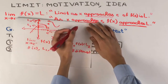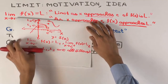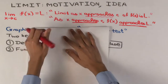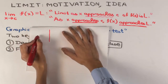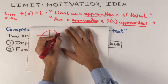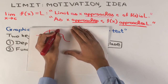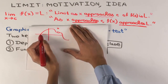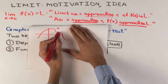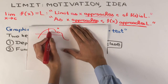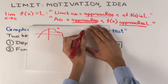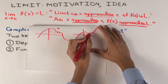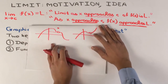Let me make an example where the limit does exist. Say you have a picture where the left-hand limit and right-hand limit are the same value, but the actual function value f(c) is something different. You could also have a situation where the function isn't defined at the point at all, but the limit still exists because the left-hand limit and right-hand limit are the same.